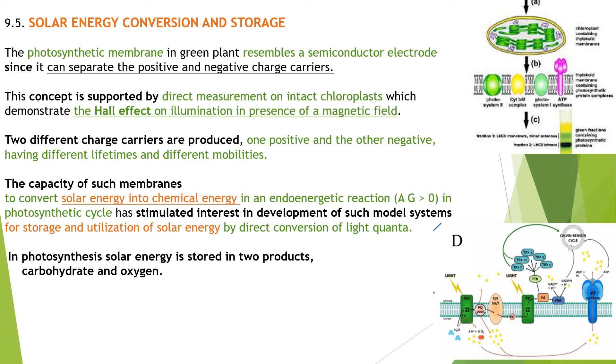In photosynthesis, solar energy is stored in two products: carbohydrate and oxygen. The carbohydrate can be burned and energy can be released in air.